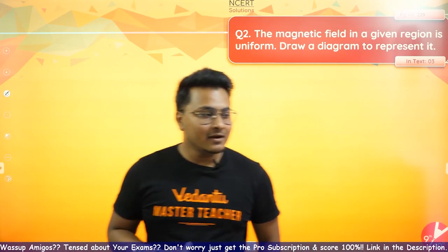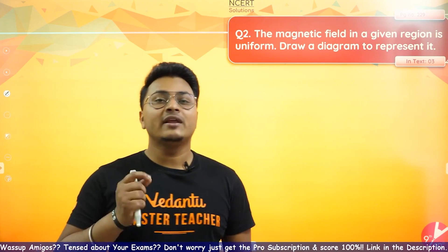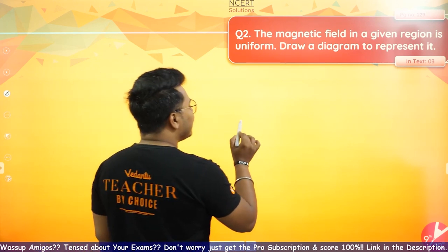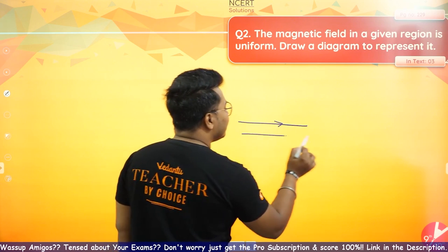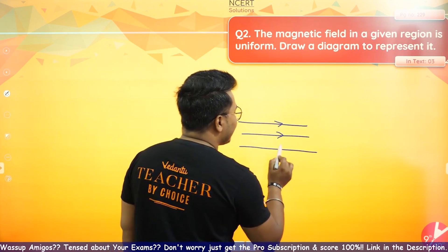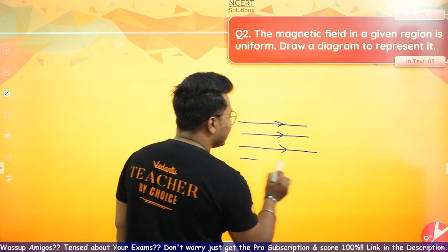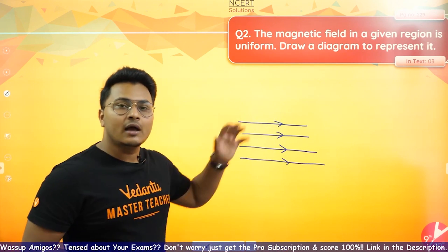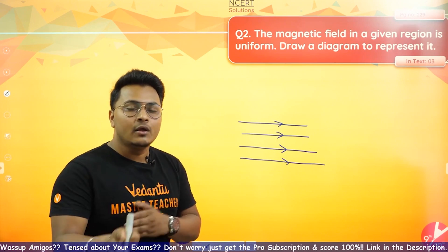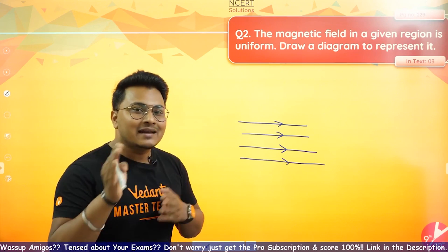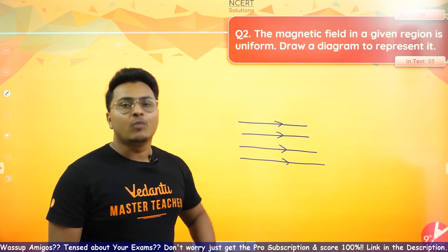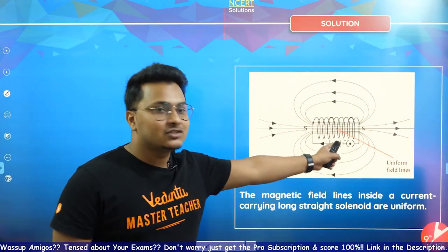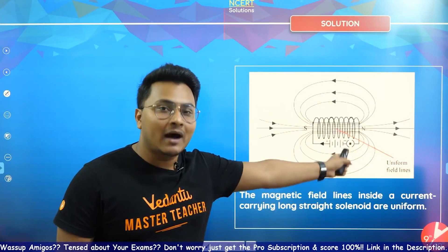Question two: The magnetic field in a given region is uniform — draw a diagram to represent it. If there is a uniform magnetic field, the field lines will be equidistant and parallel. The best example for this is what happens inside the solenoid and a bar magnet.